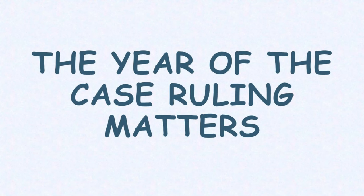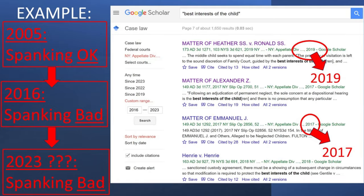The year of the case ruling matters. Each case states the year the decision was made. Start your search with decisions from the last 10 years or so to narrow your results — you can always expand your search. In addition, appellate court cases can be overturned years later. For example, a decision from 2005 might say it's okay for a parent to spank a child, but a 2016 case might overturn that and now say it's in the worst interests of a child to be spanked. So in 2023, you can't use the 2005 case to say it's okay that you spanked your child because that rule changed in 2016.